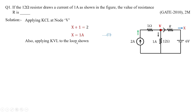Also applying KVL to the loop where current X flows in the clockwise direction. I consider this loop because on the right side I have 6 volts. The unknown parameter is R, and X is the current flowing in R — thereby a voltage drop R×X is obtained. Current flows from higher to lower potential, so plus is on the right of R and minus on the left. Also, 1 ampere flows from V towards negative potential, creating a drop across the 12-ohm resistor.